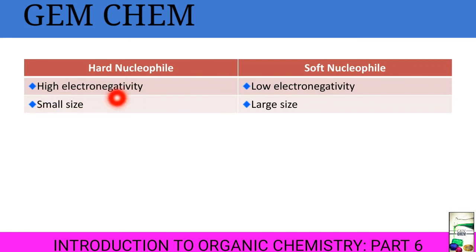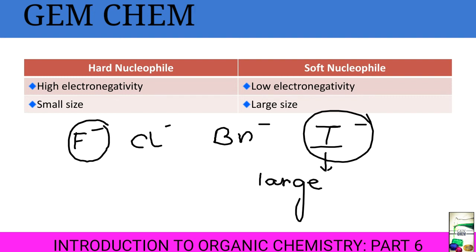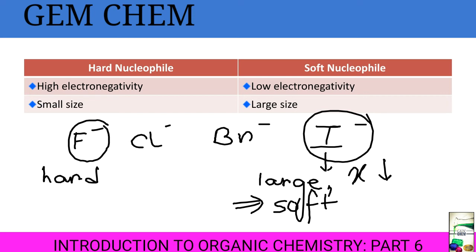Hard and soft nucleophiles: hard nucleophiles have high electronegativity and small size, while soft nucleophiles have low electronegativity and large size. Considering the trend F⁻, Cl⁻, Br⁻, I⁻: this goes from least to most nucleophilic. Since iodide is large in size and low in electronegativity, it is a soft nucleophile, while F⁻ is the hardest nucleophile.